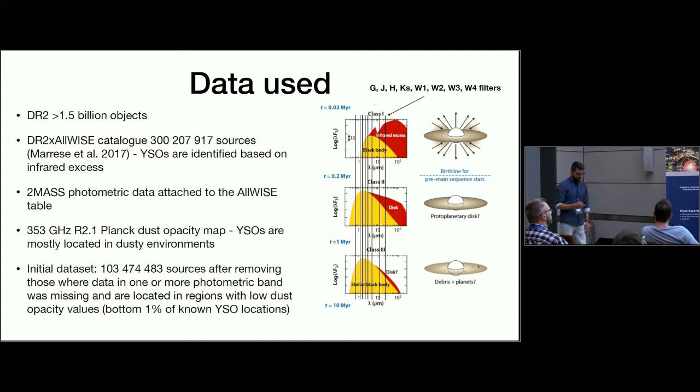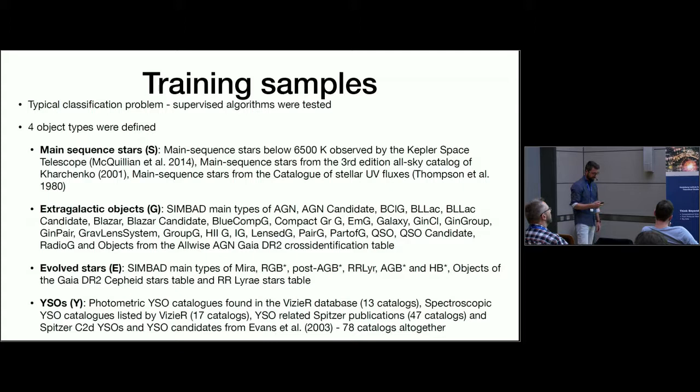Our initial dataset where we try to find the YSOs is 103.5 million sources. We removed those objects where one or more photometric data was missing or which were located in regions with low dust opacity values. We looked at the known YSOs where they are located, and the bottom 1% gave us a contour. Inside this contour we were looking for the YSOs.